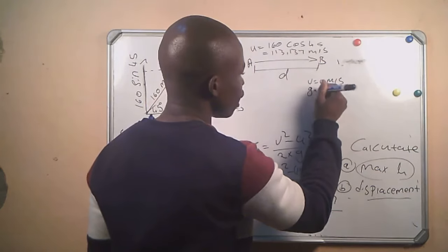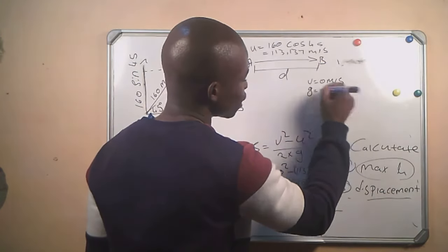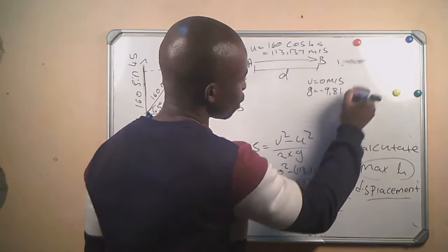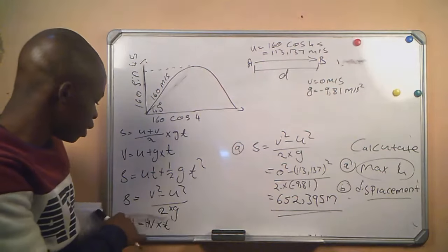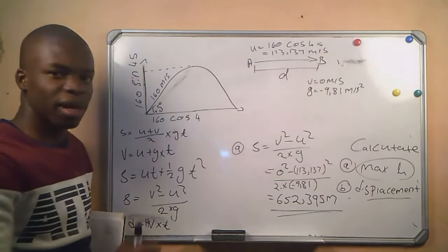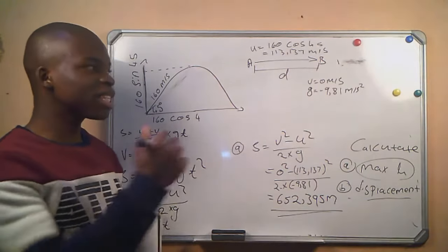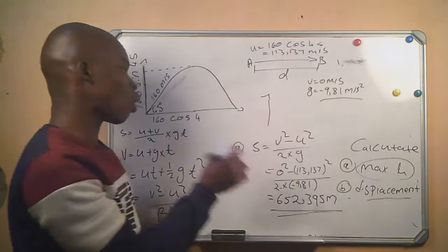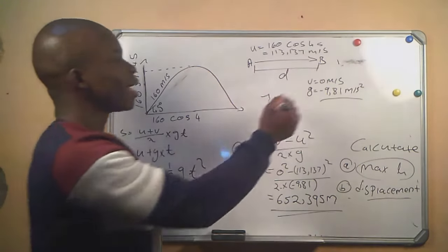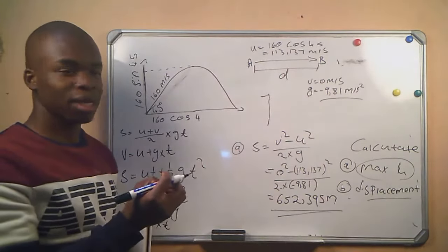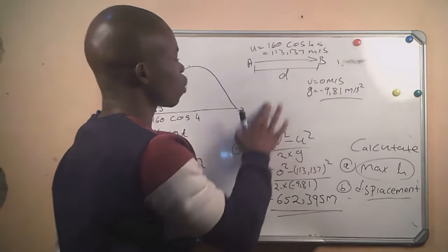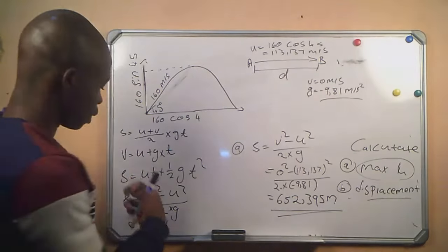For part (b), the gravitational acceleration is −9.81 m/s². However, we cannot use the same formula we used for maximum height. Because according to the horizontal component the ball is not moving upward, gravitational acceleration is not the main factor bringing it to rest — therefore we cannot use that equation. We have to find another way to calculate the displacement.